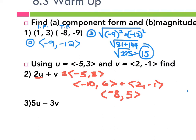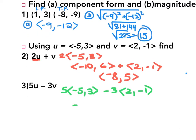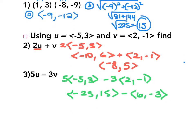Then I go to three: five U minus three V. So now I'm doing five times U minus three times V. And I get negative twenty-five, fifteen. Now I have two choices: either multiply the negative three in on both and change it to addition, or keep it as a minus and distribute the three in. Either way it doesn't matter — just be careful, don't do both. So I do subtraction: negative twenty-five minus six is negative thirty-one, and fifteen minus negative three becomes fifteen plus three, or eighteen.